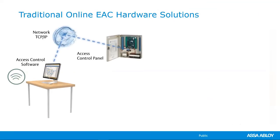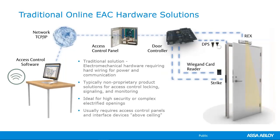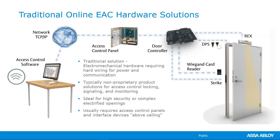So diving into it, this is what we have here is called a traditional access control system. With every access control system, you're going to have access control software over there on the left. And then that's going to be networked through your facility — whether your facility is a building, multiple buildings, maybe a campus, or even a city. From there, we're going to narrow our focus to an access control panel in a building, and focus in on a door controller that's controlling a specific door. Each one of these blue dotted lines — consider these wires being run through your walls, through your ceiling.